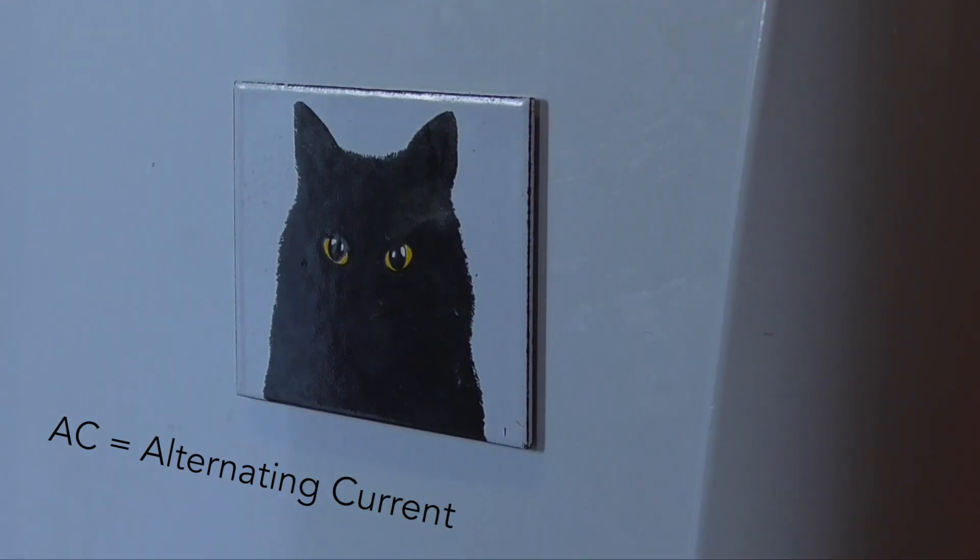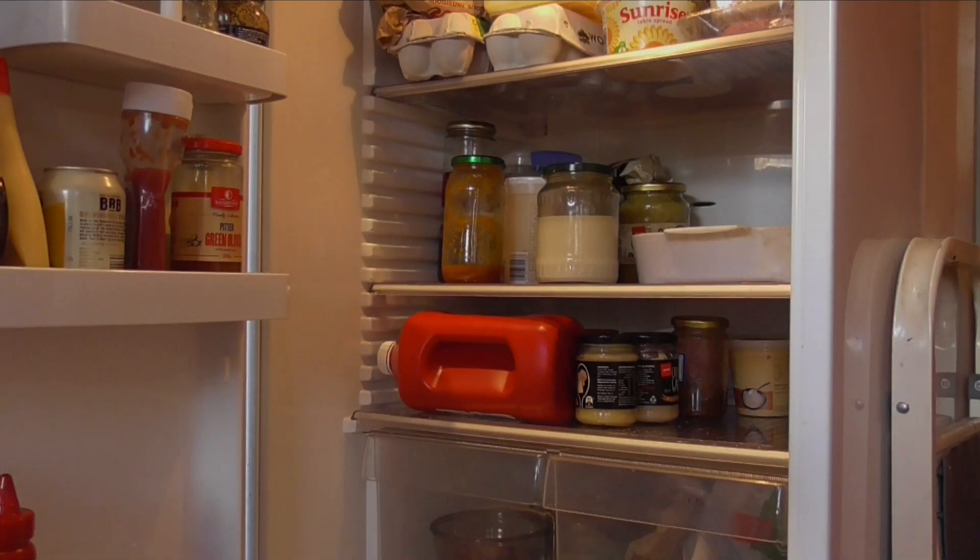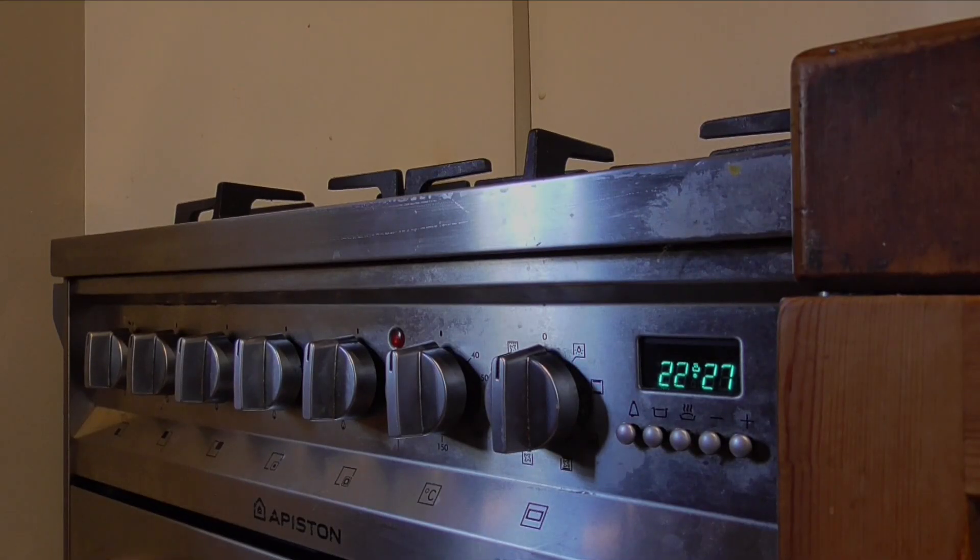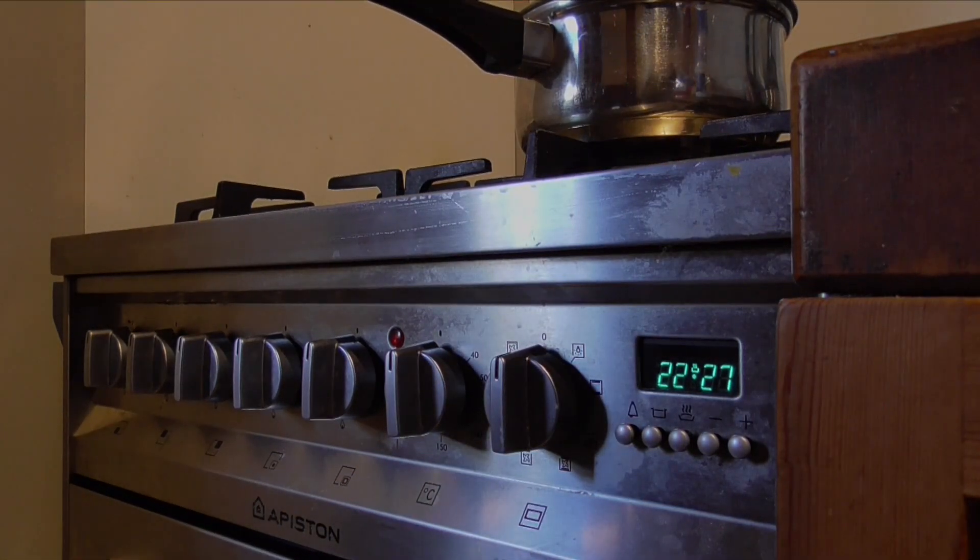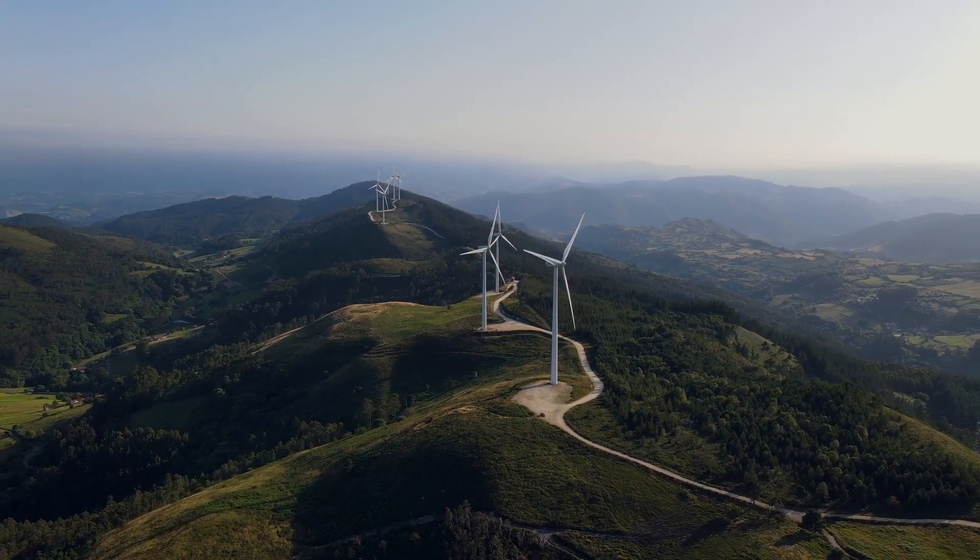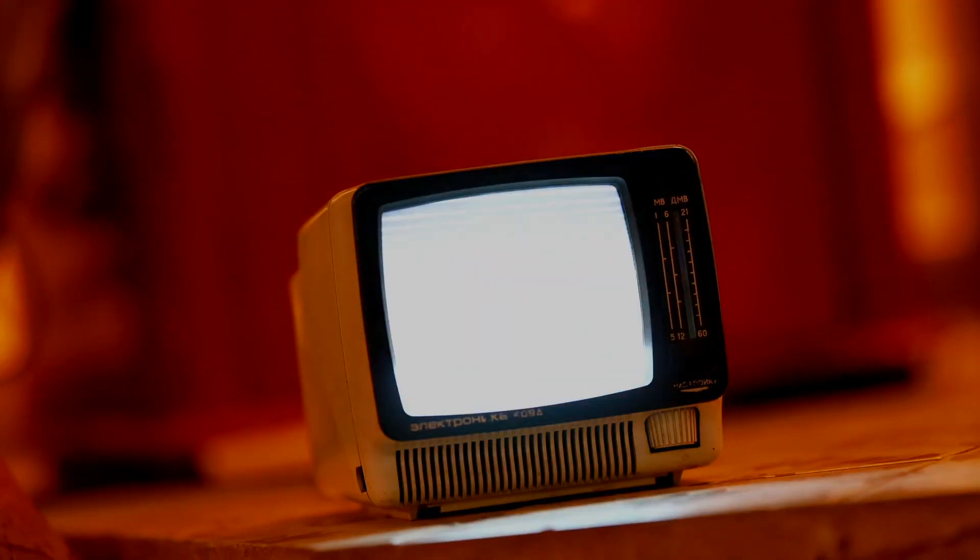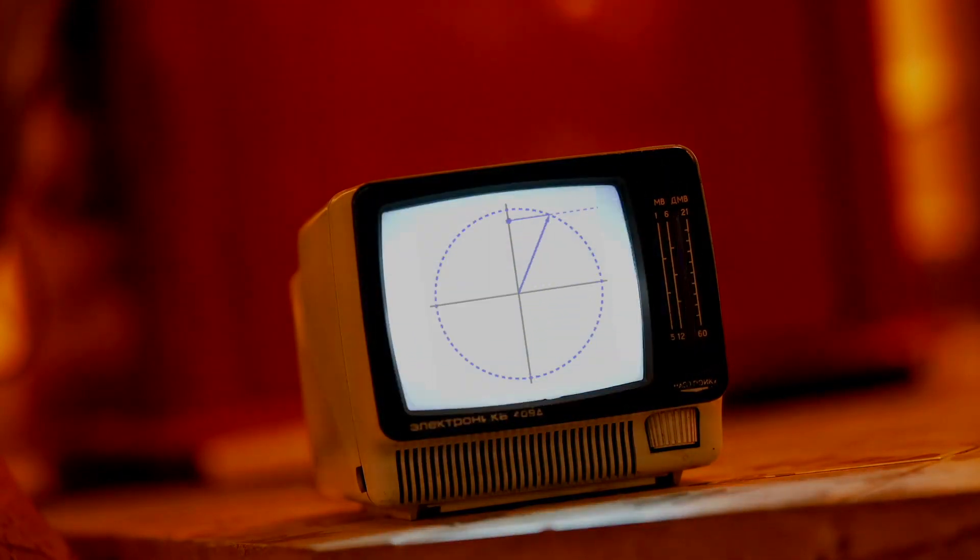AC stands for alternating current, and this type of electricity is used for larger scale applications. It provides power to toasters, heaters, ovens, fridges, and many more household appliances. The reason we call it alternating current is because it actually changes direction constantly, as a result of being generated by spinning turbines. This change in direction happens a certain number of times each second. It has a certain frequency. That's why phasers can be used to model it.